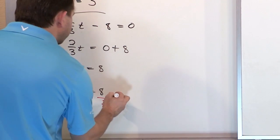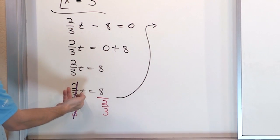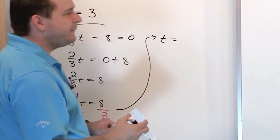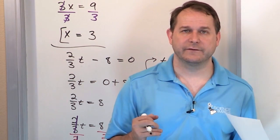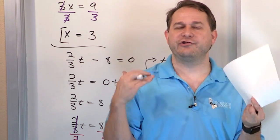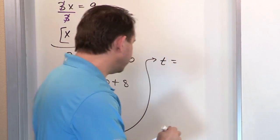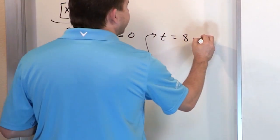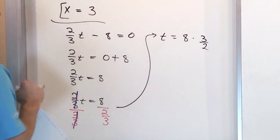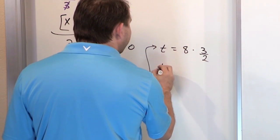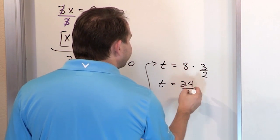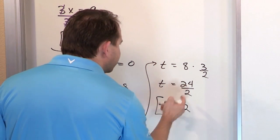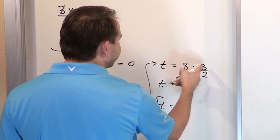When you divide by a fraction, you change it to multiplication and flip the second fraction. So 8 divided by two-thirds becomes 8 times three-halves. That's 8 over 1 times 3 over 2, giving 24 over 2. And 24 divided by 2 is 12, so the answer is t equals 12.